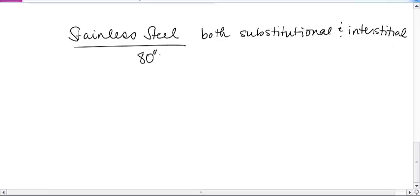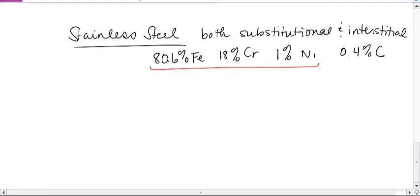A typical formula, so to speak, for steel, is about 80.6% iron, this is not the only recipe, so to speak, of this. That's 18% chromium, 1% nickel, and 0.4% carbon. And the reason I point that out to you is that these three have very similar radii.